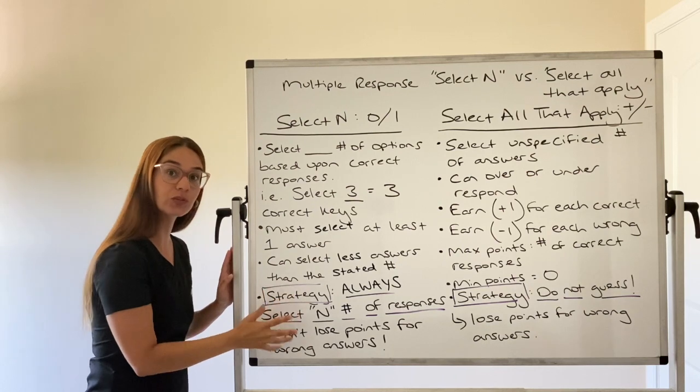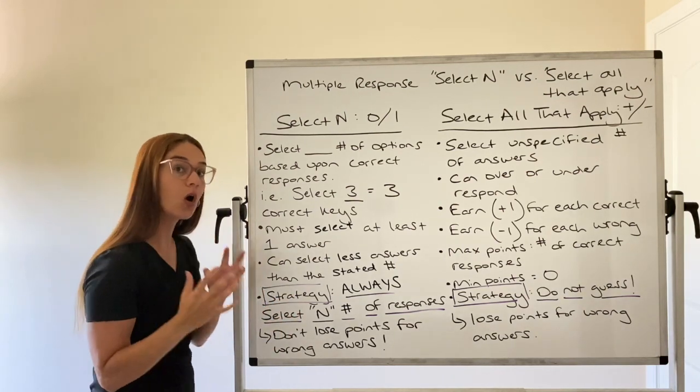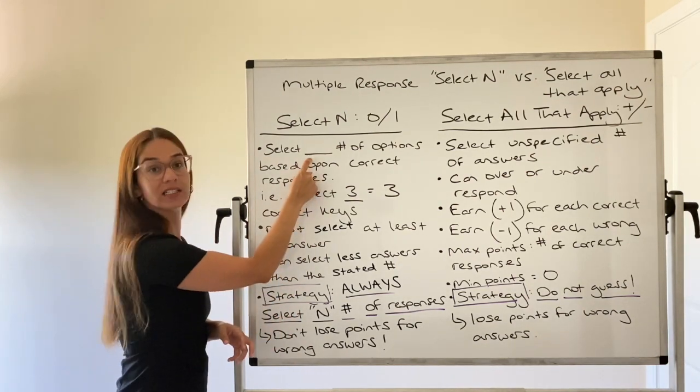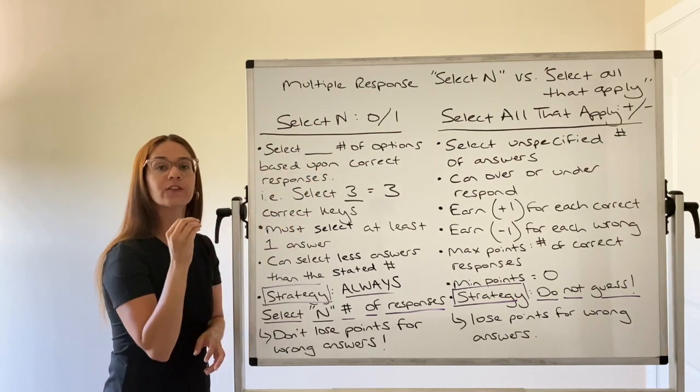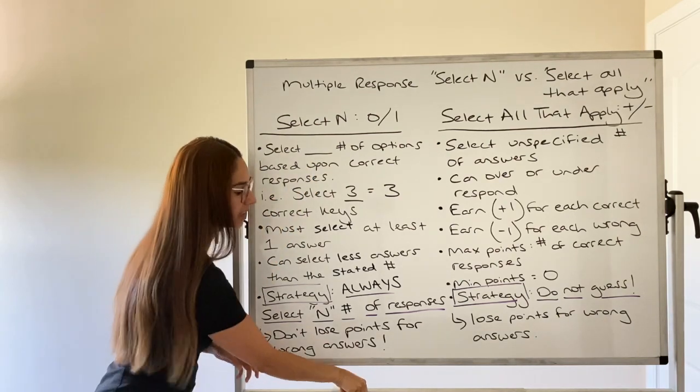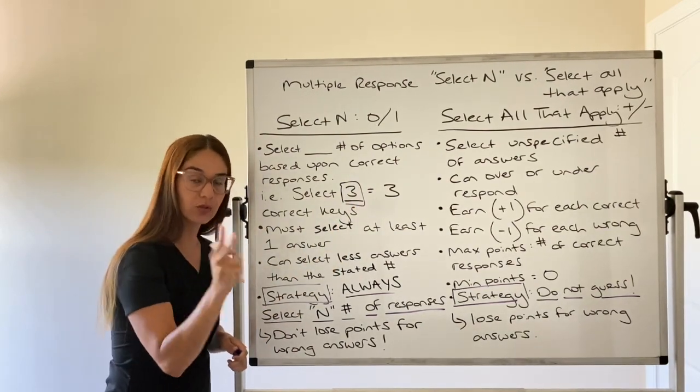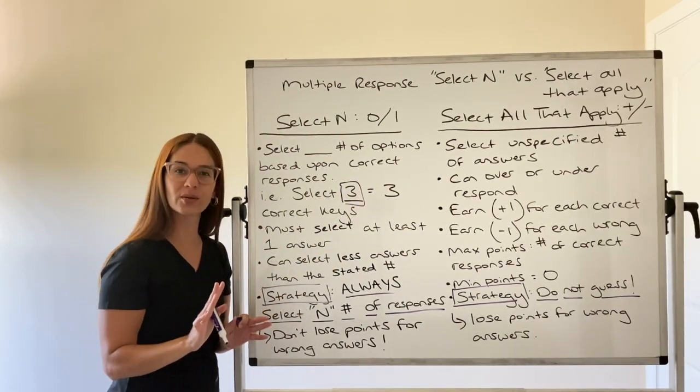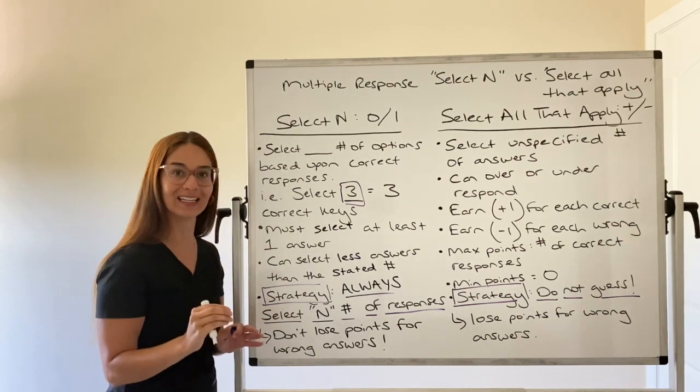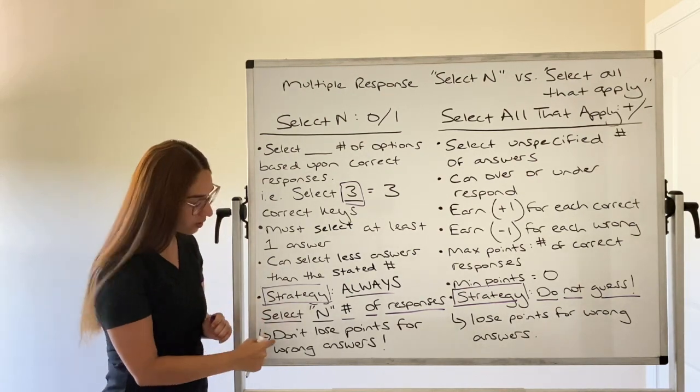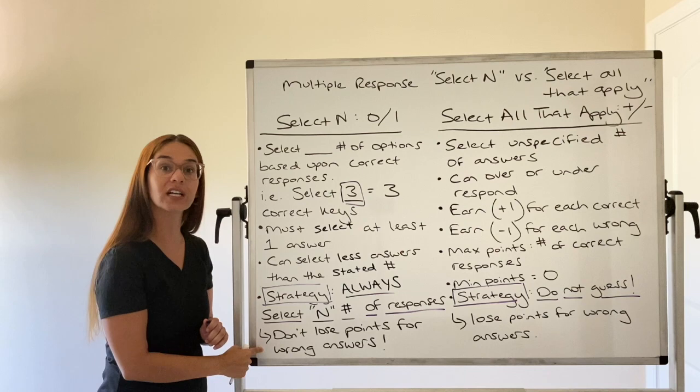You never lose a point if you select the wrong answer for this type of scoring model. So your strategy for Select N is to guess. You should always select whatever they tell you to. So if they tell you to select the best three, and you absolutely know two are correct, but you're not really sure about your third answer, go ahead and take it because you will not lose a point if that third answer is incorrect.